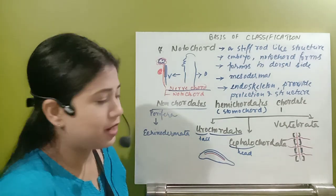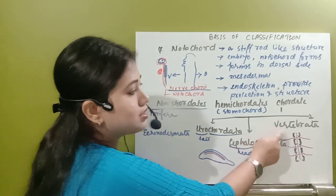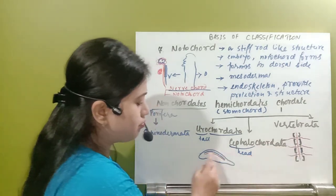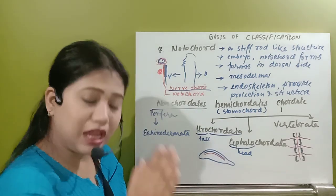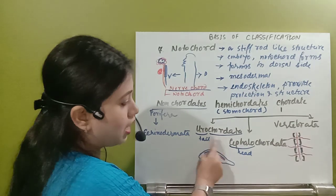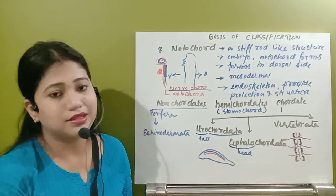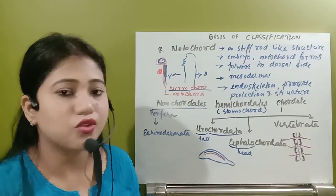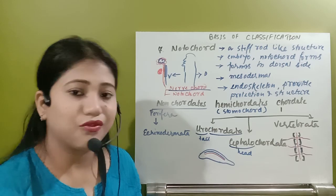There is a very famous line: all vertebrates are chordates, but all chordates are not vertebrates. Cephalochordata and urochordata are not vertebrates because they have separate nerve cord and notochord. In case of vertebrates, the nerve cord is inside and outside they have vertebrae. So all vertebrates are chordates but all chordates are not vertebrates. Up to this, these are the bases of classification. In the next video we'll see more complexities in the different organ systems. Thank you.